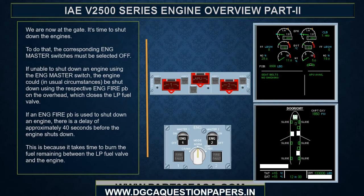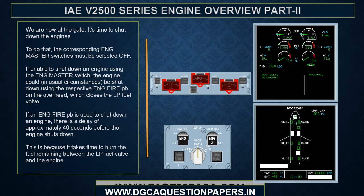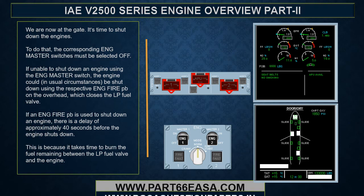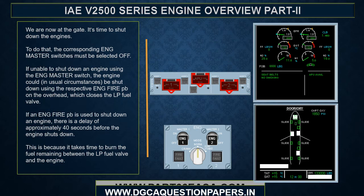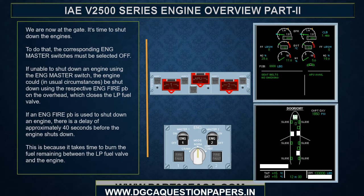We are now at the gate. It's time to shut down the engines — the corresponding engine master switches must be selected off. If unable to shut down an engine using the engine master switch, the engine could, in unusual circumstances, be shut down using the respective engine fire push button on the overhead, which closes the low pressure fuel valve. If an engine fire push button is used, there is a delay of approximately 40 seconds before the engine shuts down, because it takes time to burn the fuel remaining between the low pressure fuel valve and the engine.